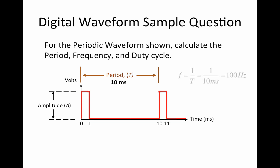Frequency is the reciprocal of the period, so frequency F is equal to 1 divided by T, which is 1 divided by 10 ms, which gives you 100 Hz.